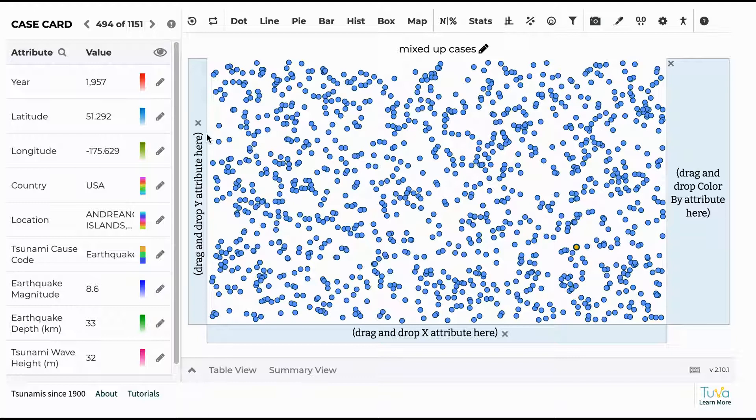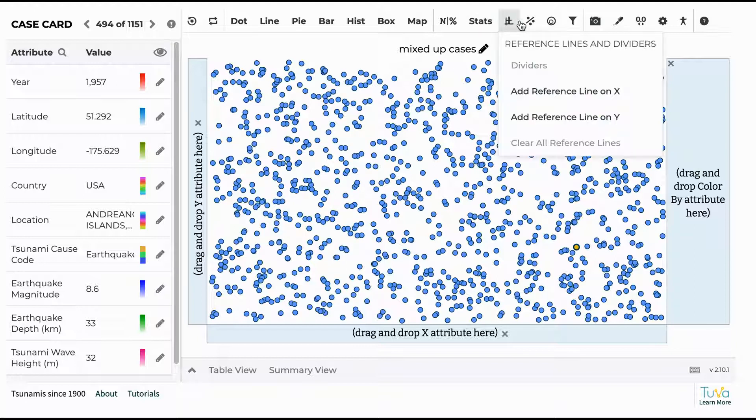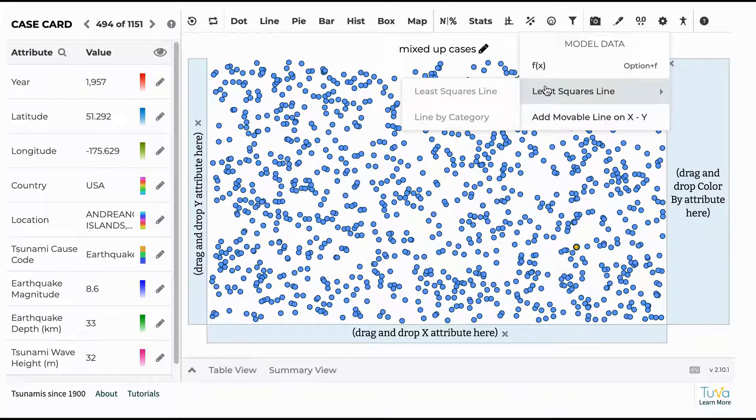They're not going to be using the color by attribute option on the right hand side of the graph for this. They also do not have to have a line of least squares drawn because that is likely above the grade level for their math. But it is an option if they want to see a line of best fit in the data.